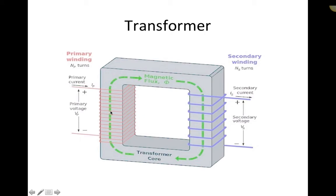A couple of key things with transformers: you have some sort of magnetic material — a magnetic core, like an iron core. There are different types of transformers, but this one has an iron core which is a magnetic material. Then you have coils wrapped around one end of the transformer, and on the other side you have coils wrapped around the other end, which is called the secondary side of the transformer.